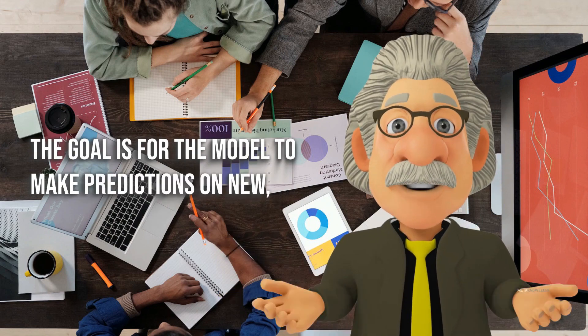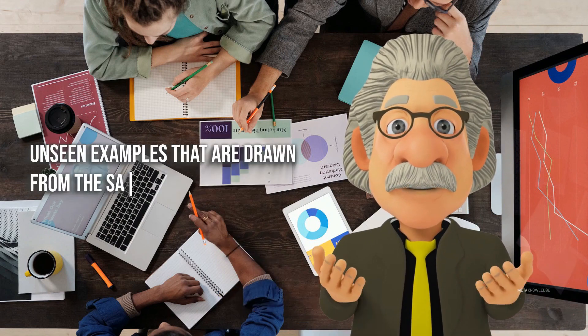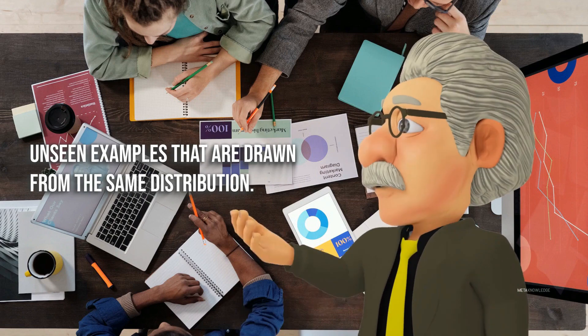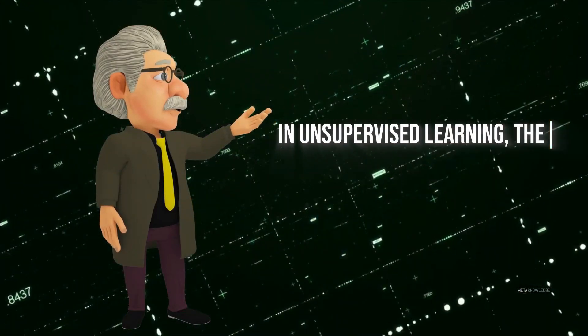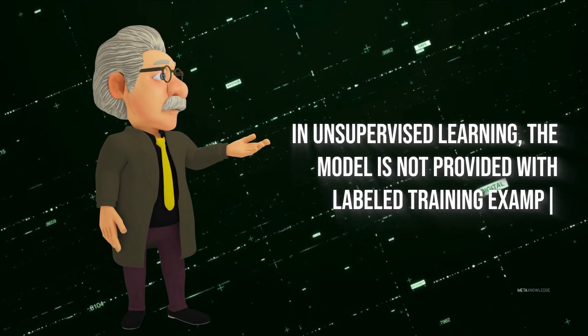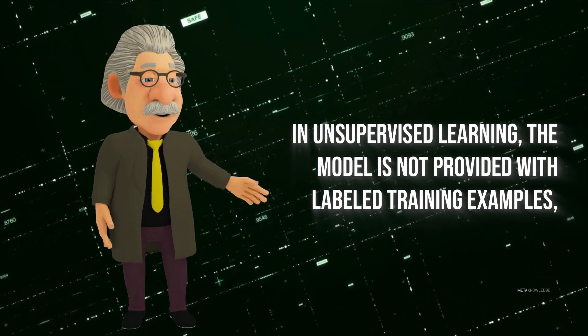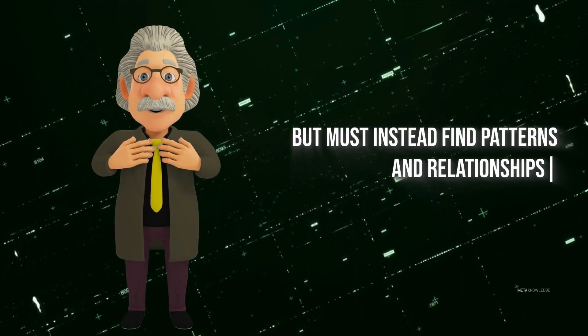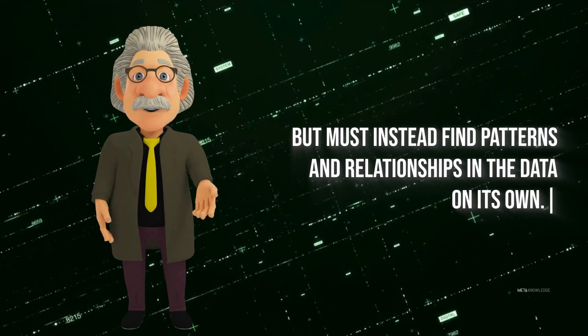The goal is for the model to make predictions on new, unseen examples that are drawn from the same distribution. In unsupervised learning, the model is not provided with labeled training examples but must instead find patterns and relationships in the data on its own.